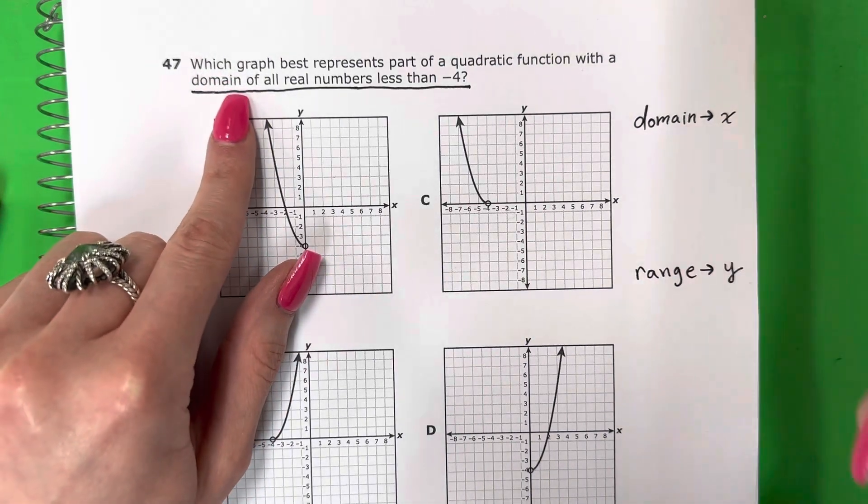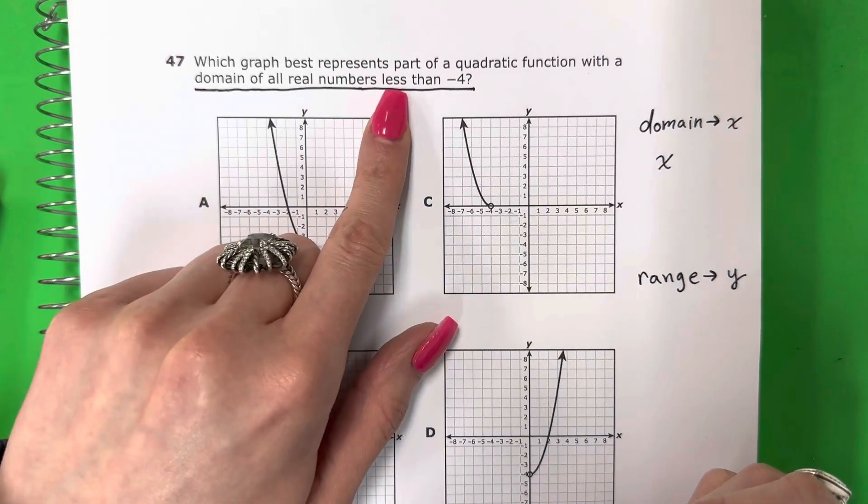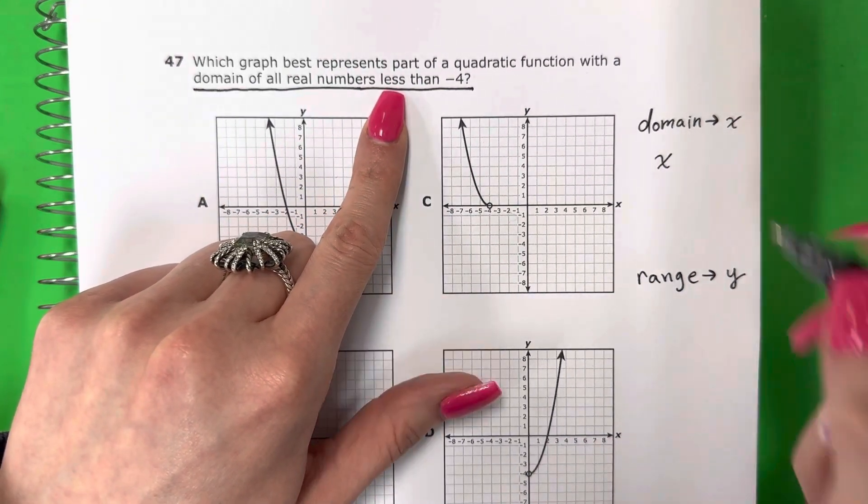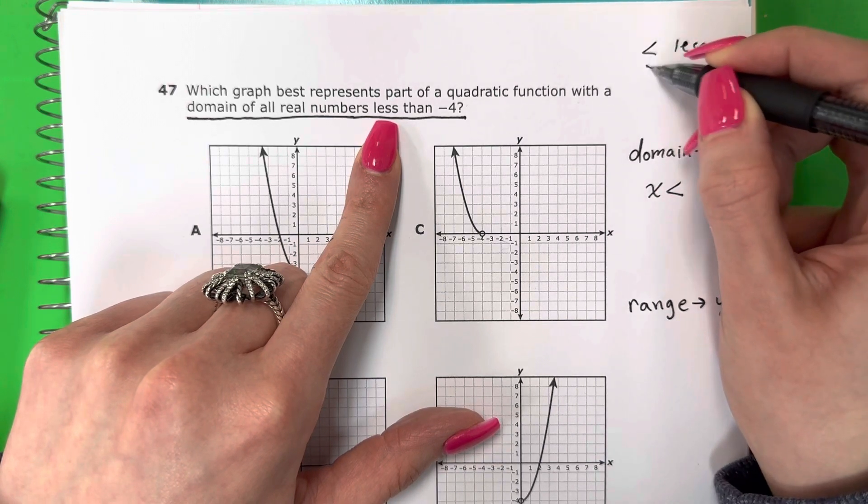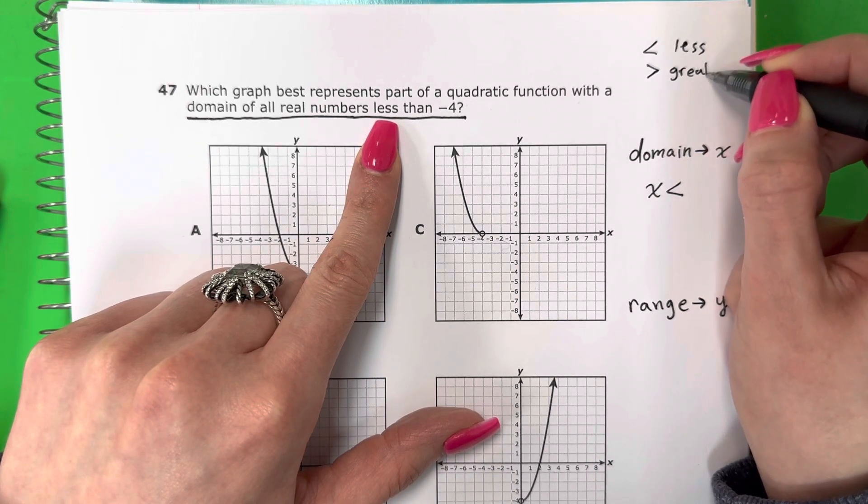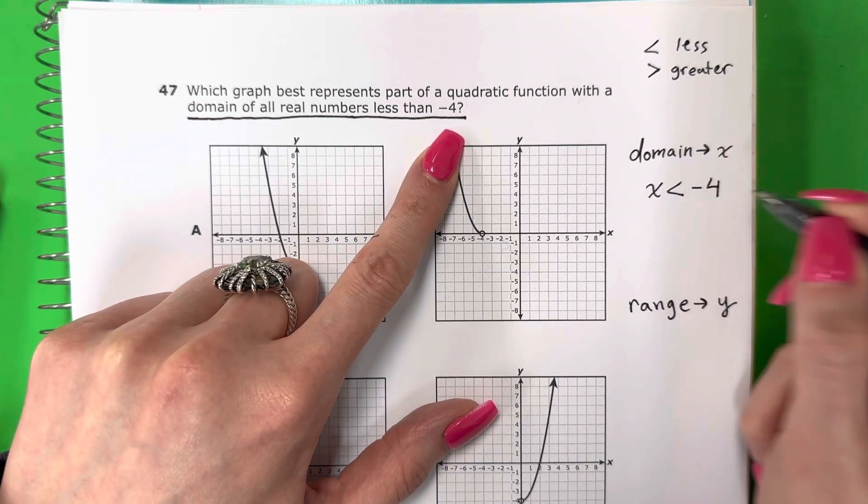This one says domain, so I'm going to go ahead and put x. Of all real numbers less than, menor que. So this is less than. I just want to remind you this is less, menor, this is greater, mayor. Less than negative 4.